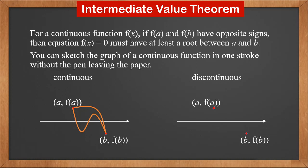Those intersections with the x-axis are roots of f(x) = 0. Therefore, f(x) = 0 must have at least one root between a and b.